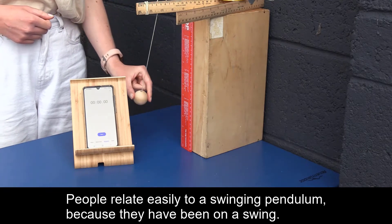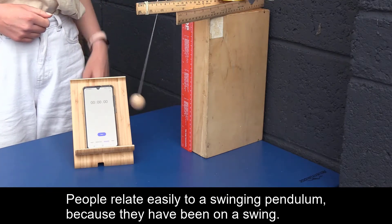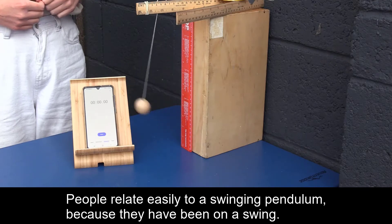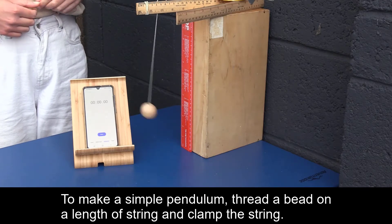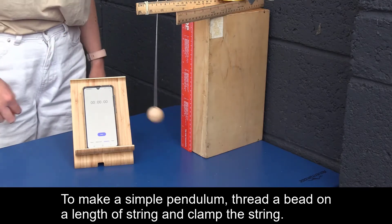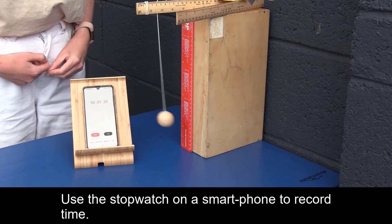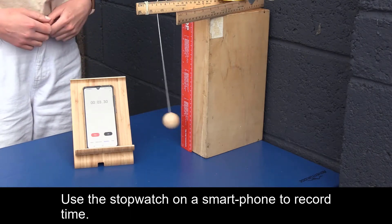People relate easily to a swinging pendulum because as children they have been on a swing in a playground. To make a simple pendulum, thread a bead on a length of string and clamp the string as shown. Use the stopwatch on a smartphone to record time.